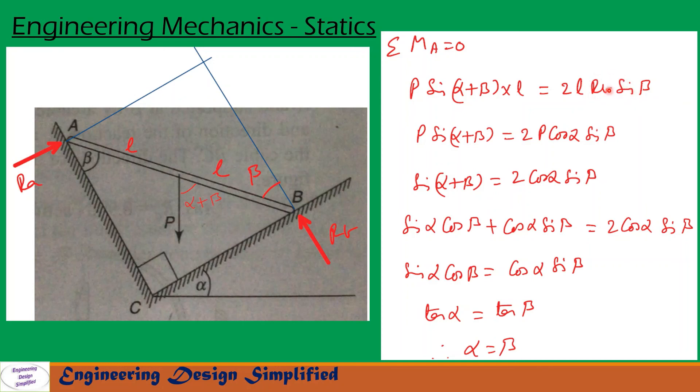We have seen in the previous slide RB is P cos alpha, that is substituted here. So after simplification, we get tan alpha equal to tan beta. So tan alpha will be equal to tan beta when alpha equal to beta. So when alpha equal to beta, then this bar will be in equilibrium.